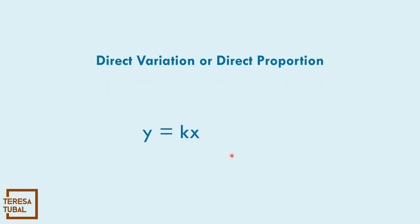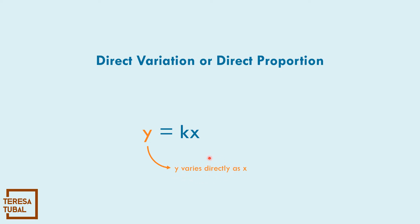How to read this one? y equals kx. So, y varies directly as x. y varies proportional as x. As you can see, we have the word 'y varies' and the word is 'directly.' So k is the constant of variation.